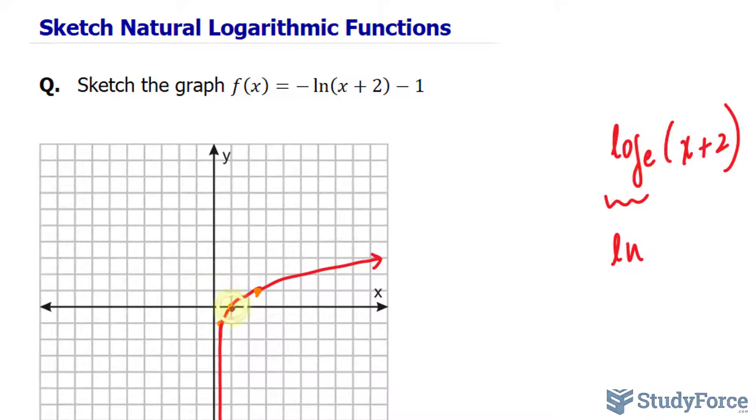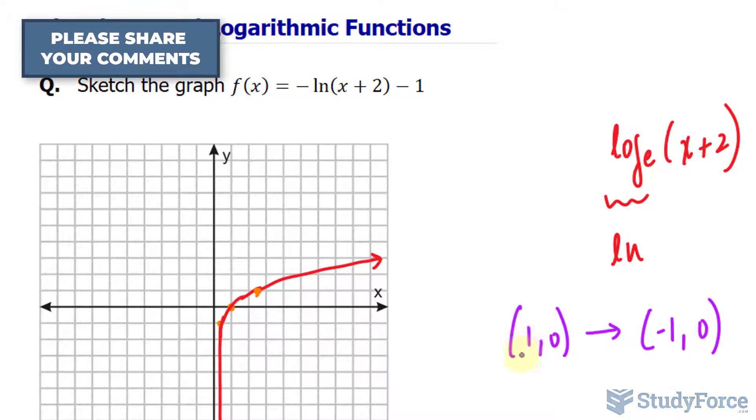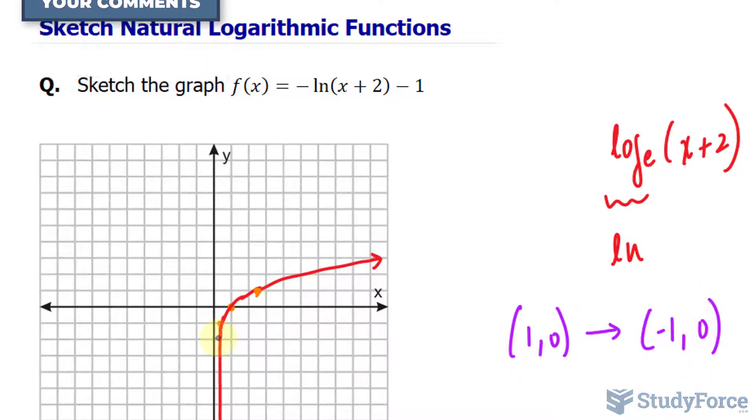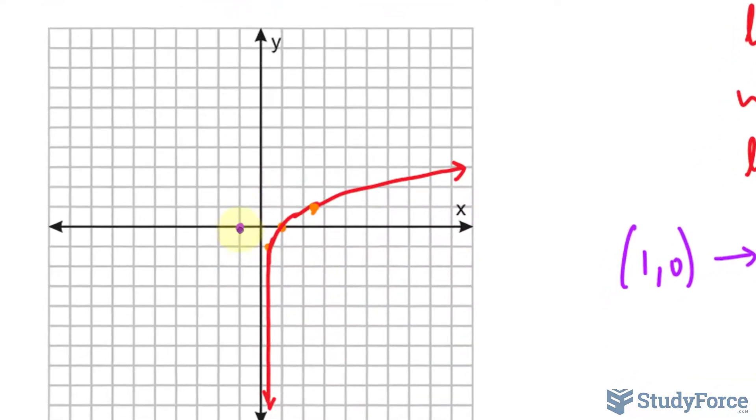So this point is easy. It goes from being 1 and 0 to the left would mean negative 1 and 0. I'm subtracting 1 minus 2, which is negative 1 and 0. So that's our new point. Negative 1 and 0 is right here.